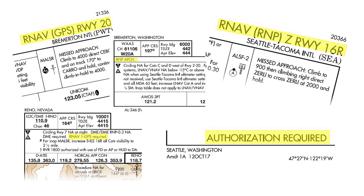Many pilots are confused by the terms RNAV, RNP, and RNP approach that appear on instrument approach charts, and it's easy to see why. Although ICAO is adopting a new naming standard as the world shifts to performance-based navigation, or PBN, the FAA is sticking to its conventions. That approach leads to some terms having more than one meaning, or to blurring important distinctions. Here's a closer look at what those abbreviations, initialisms, and notes mean.